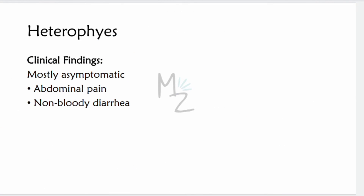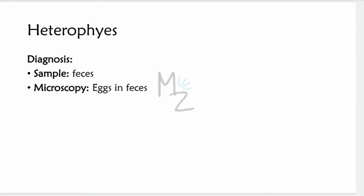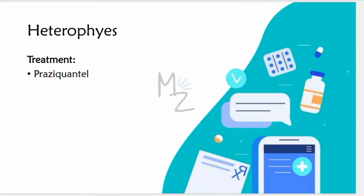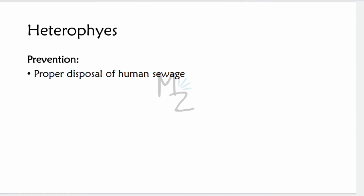Clinical findings: pathologic findings are due to inflammation of intestinal epithelium from the presence of adult flukes. Most infections are asymptomatic, but abdominal pain and non-bloody diarrhea can occur. Diagnosis requires a feces sample; diagnosis is based on finding typical eggs in feces. Treatment: praziquantel is the drug of choice. Prevention consists of proper disposal of human sewage.